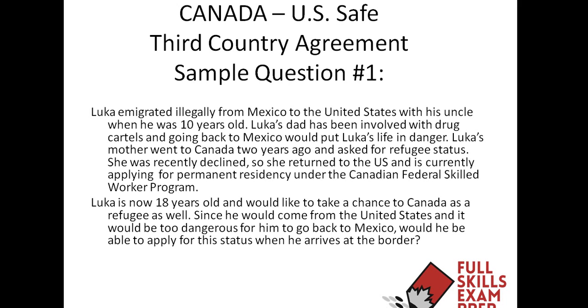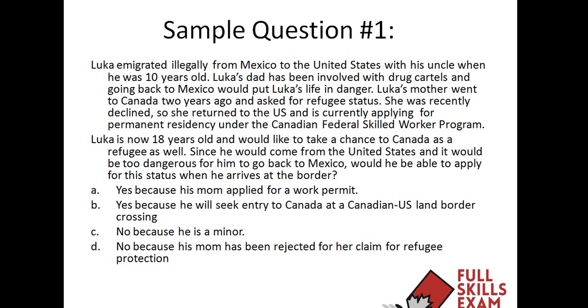So that's the scenario and we're going to take a look at the potential answers. Option A: yes, because his mom applied for a work permit. Option B: yes, because he'll seek entry to Canada at a Canadian-US land border crossing. Option C: no, because he's a minor. Option D: no, because his mom has been rejected for her claim for refugee protection.